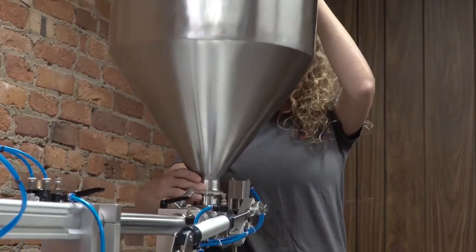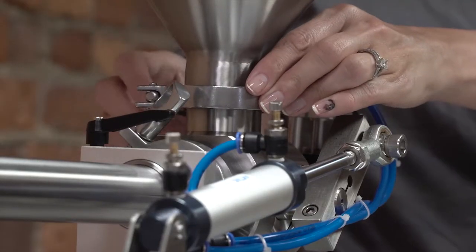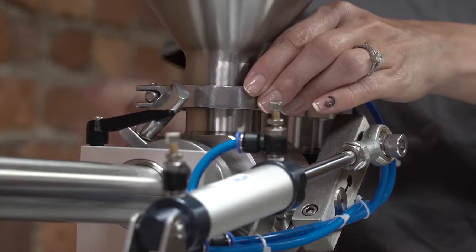Reinstall the hopper gasket and then the hopper. Install the sanitary clamp. Make sure all clamps are hand tight.